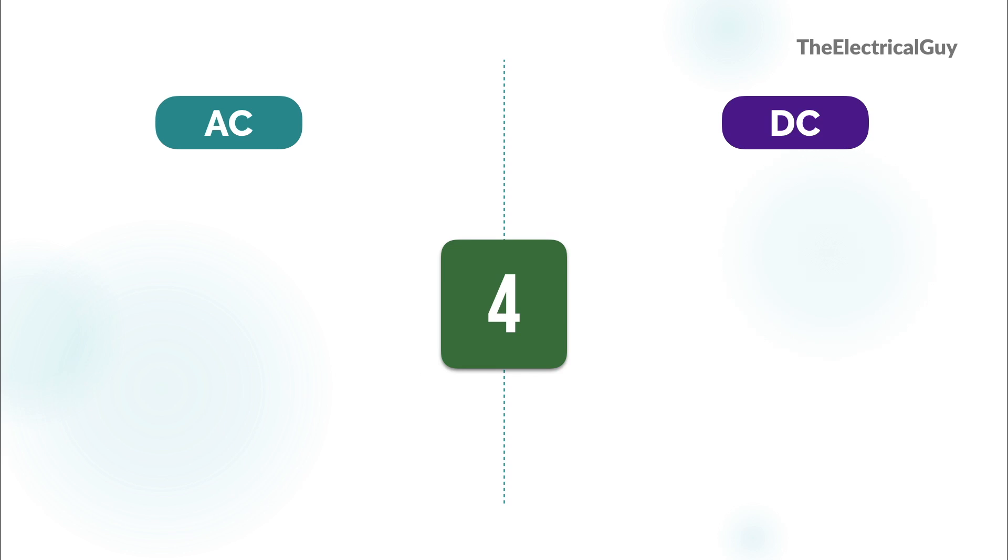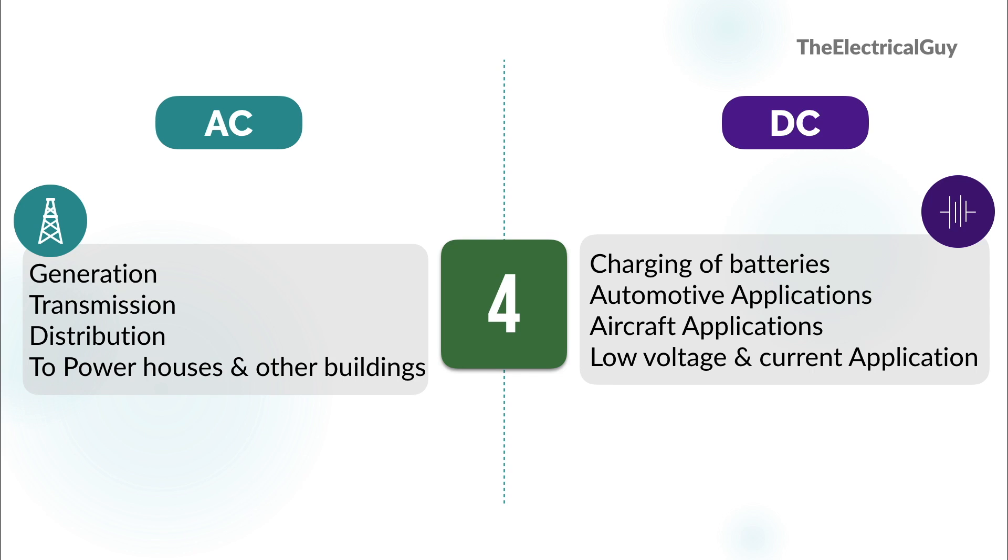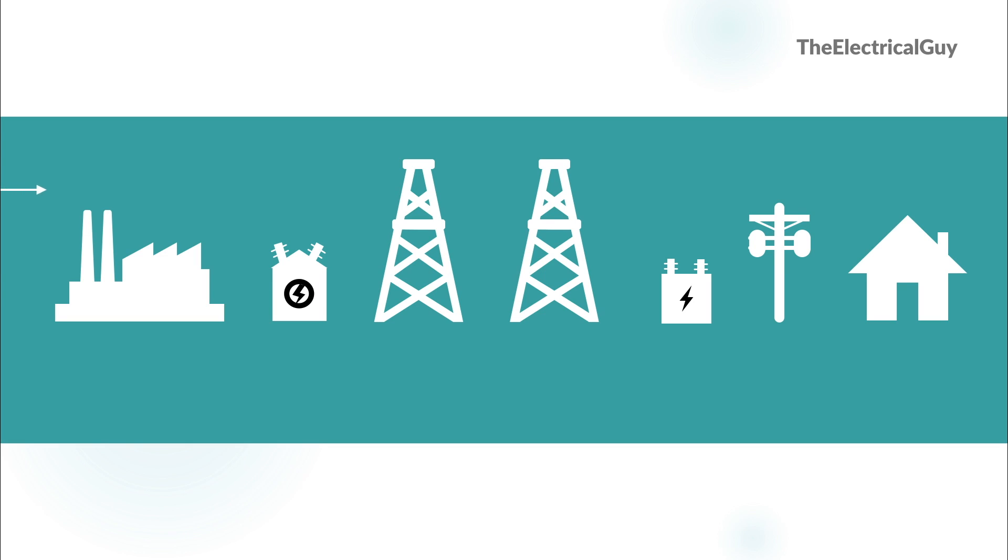Now let's look at some of the applications of AC and DC as fourth point. DC power is widely used in low voltage applications such as charging batteries, automotive applications, aircraft and other low voltage, low current applications. Whereas AC power is used for generation, transmission and distribution. AC is also used to power the houses, different types of buildings, etc. With AC it is possible to build electric generators, motors and power transmission and distribution systems which are way more efficient than DC.